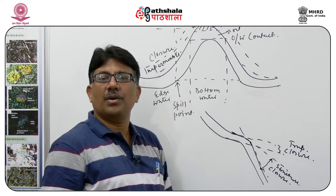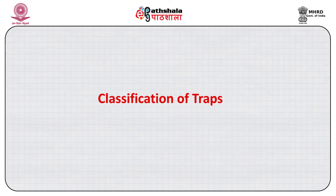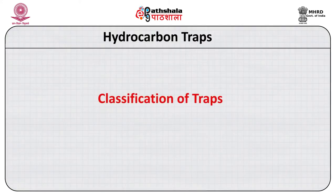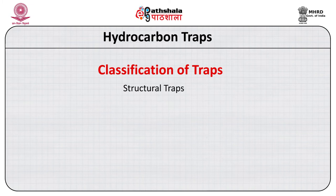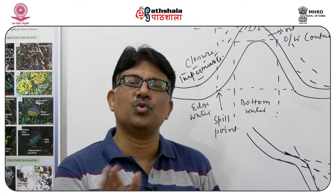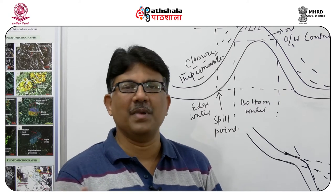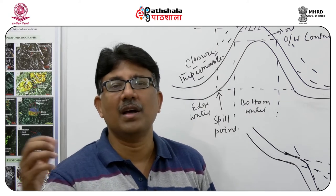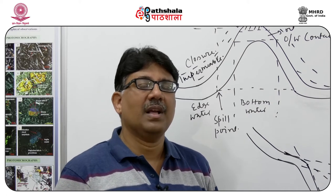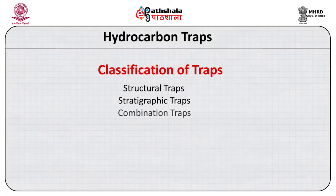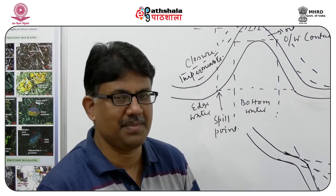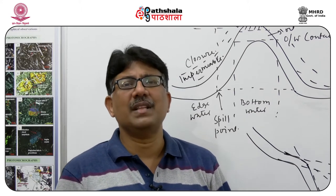What are the different ways traps can be formed? There are structural traps which are formed by deformation in rock, there are stratigraphic traps which are formed because of the permeability difference and facies change during deposition and permeability variation. We can also have trap formation by diagenetic processes, and traps formed by a combination of structure and stratigraphy — these are called combination traps.